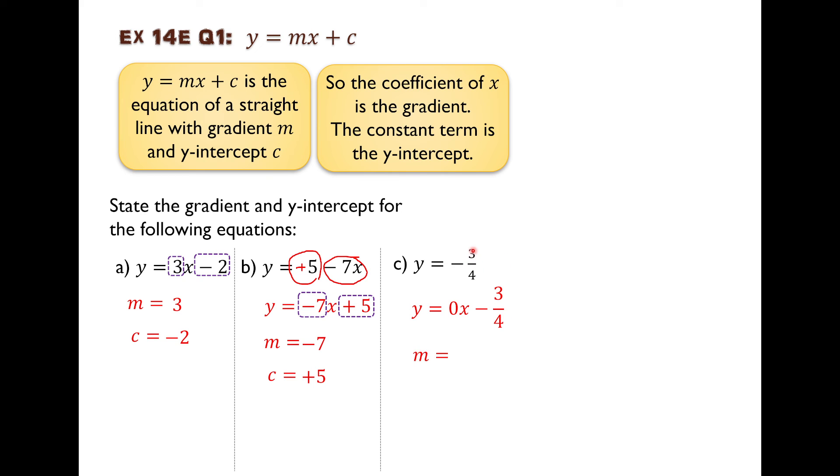So m, as a number, is nothing. It's 0. There is no x term. So the gradient, the coefficient of the x term is 0.